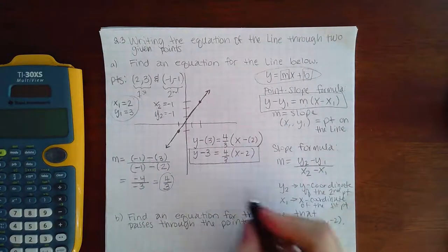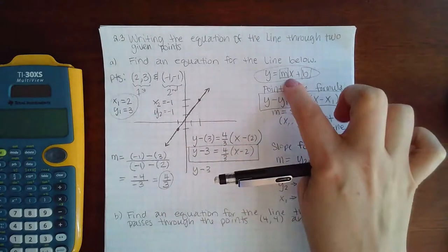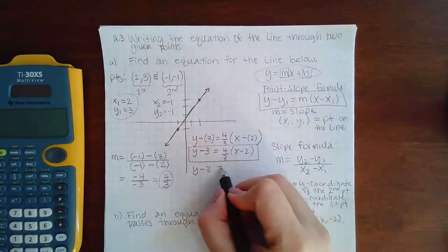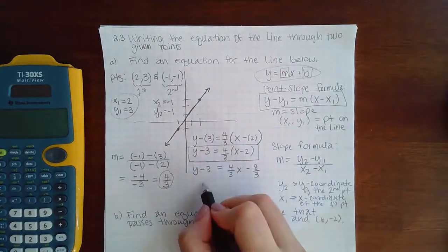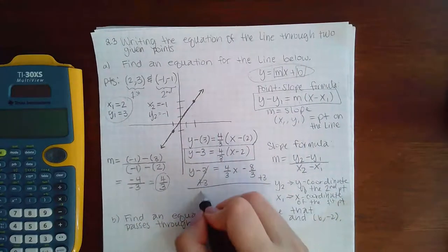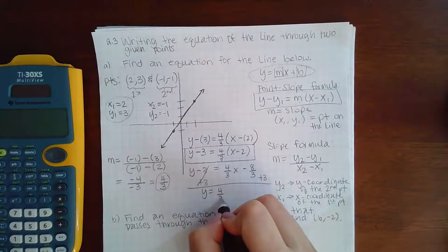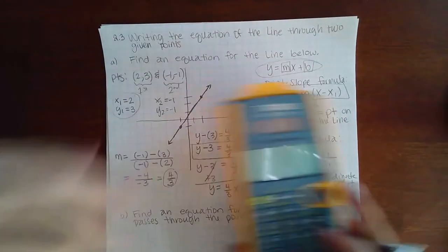So I'm going to go ahead and just do that now. So the first thing you would do to get this to look like that is distribute the 4 thirds. Then the next thing you would do is add 3 to both sides.